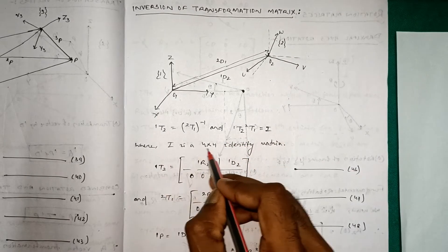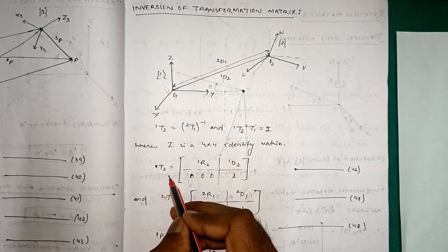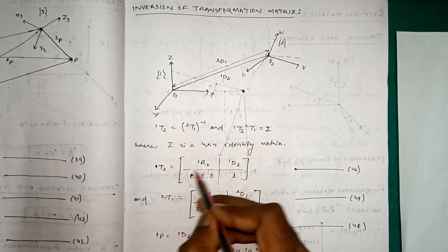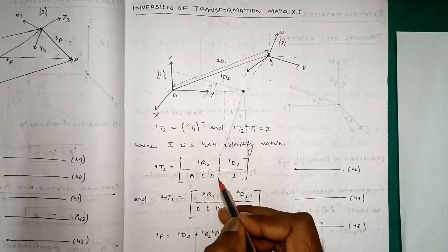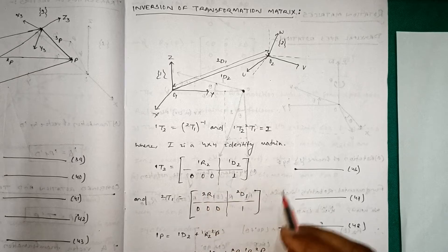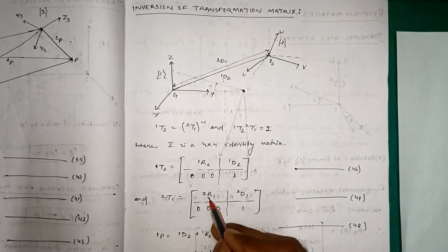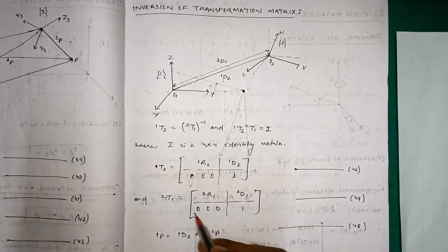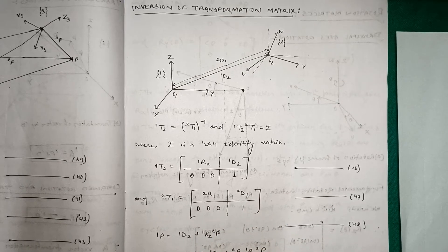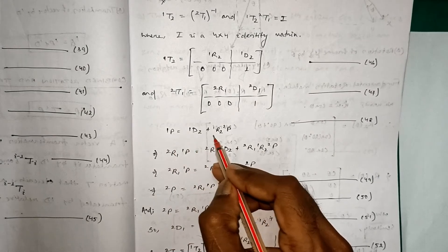So 1t2 is equal to the matrix [1r2, 1d2; 0 0 0 1], and 2t1 is equal to [2r1, 2d1; 0 0 0 1]. Now, 1p is equal to 1d2 plus 1r2 times 2p.